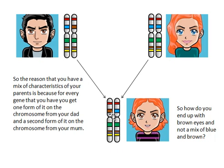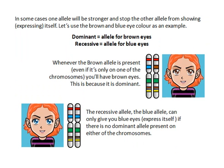As you can see here, we were talking before about the alleles. This is the gene for eye colour. The daughter has inherited a brown allele from dad and a blue allele from mum. So how do we end up with brown eyes rather than a mix of brown and blue?